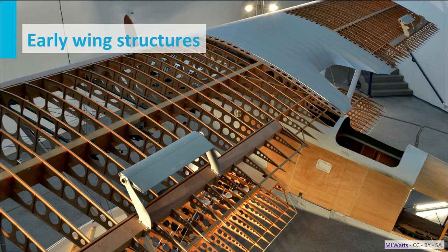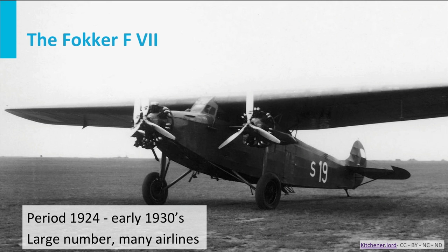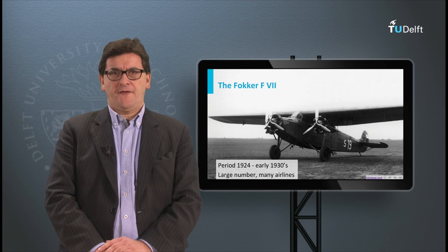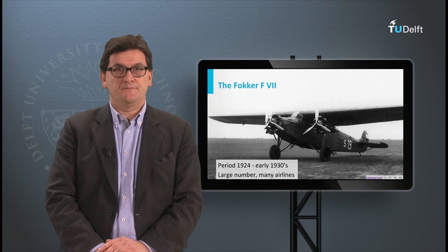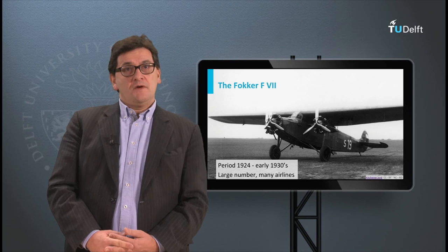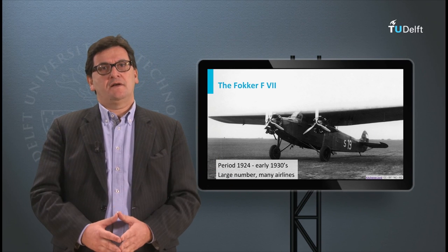Look at the big spar and all the wing ribs — wing ribs with many holes — to create a lightweight structure. The skin of this structure is fabric or textile, or sometimes plywood, but it is not meant to carry loads. A very famous aircraft in those days using such a wing was the Fokker VII. This aircraft was very successful in Europe and the United States. The wing was a thick wooden wing covered by plywood, and the fuselage was a truss structure covered with linen. The linen had only a protective function, keeping out the bad weather and the cold.